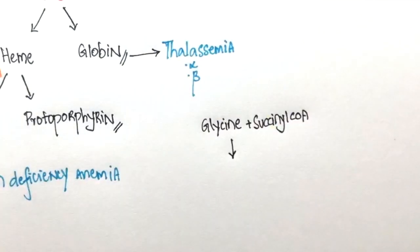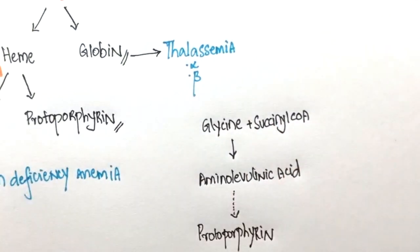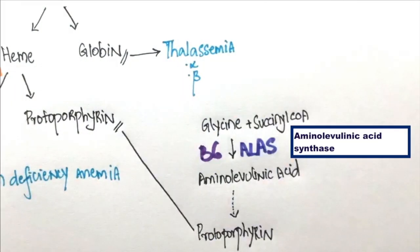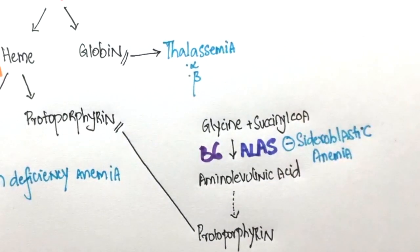Protoporphyrin is formed when glycine and succinyl-CoA are combined together. This takes place in the presence of vitamin B6 and the enzyme ALAS.